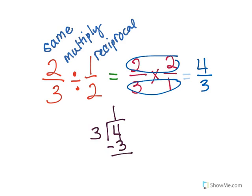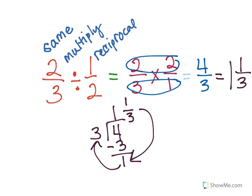I subtract, and I get one, and I'm going to go around the world, and I'm going to get one and one-third. So my answer is one and one-third.